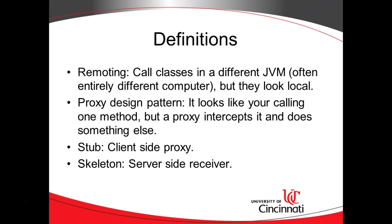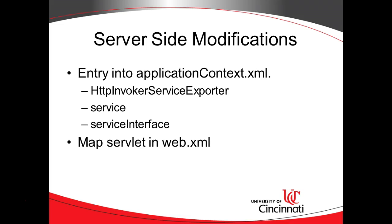The component on the client side that does this work is called a stub. The component on the server side that handles the call is called a skeleton. To make this work on the server, we need to edit our application context XML — our Spring configuration file — and add an HTTP service exporter, define a service and a service interface, then define a web servlet URL in web XML. We'll look at that in the next video where we're actually going to create this.